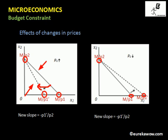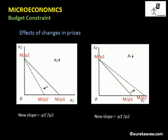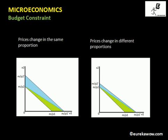When the price of good one decreases, the horizontal intercept increases while the vertical intercept remains the same, resulting in an outward swivel of the budget line. The slope changes from −p1/p2 to −p1'/p2; since p1' < p1, the slope magnitude decreases. In summary: when the price of good one increases, there is an inward swivel, and when it decreases, there is an outward swivel.